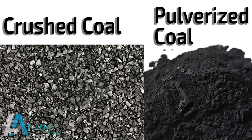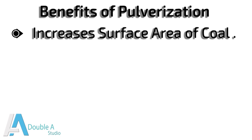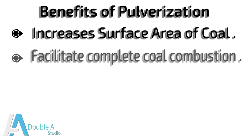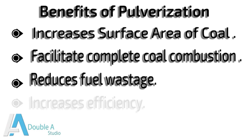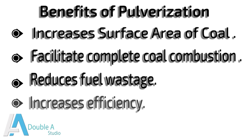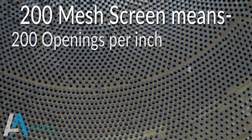Pulverization increases the surface area of coal for its complete combustion, and thus increases the efficiency of the boiler. If coal is not pulverized, it will not burn completely and will lead to fuel wastage. The finer the grinding of coal, the more efficient its combustion.